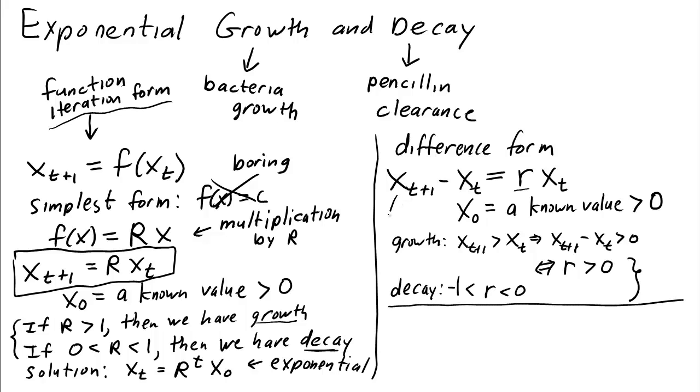Well let's take our equation in difference form and just add x_t to both sides. If I take x_{t+1} minus x_t and I add x_t, I get just x_{t+1} equals r x_t plus x_t. Well, we can factor out the x_t and we get (r+1) times x_t.